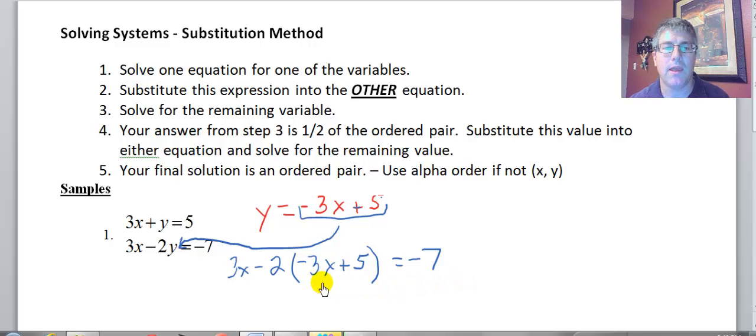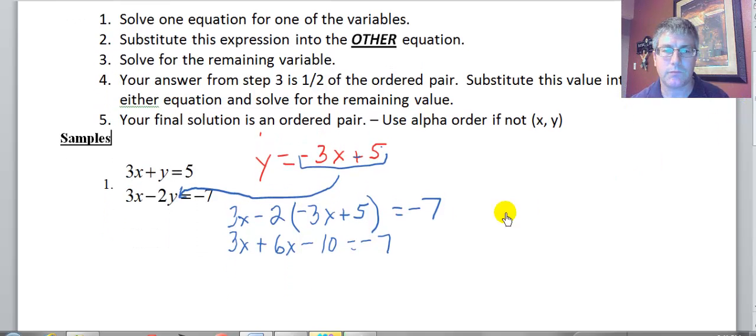So I've substituted it into the other equation. I've rewritten my new equation with one variable, X. Now we're going to solve this for X. So I get 3X plus negative 2 times negative 3X is 6X, negative 2 times positive 5 is negative 10, equals negative 7. I'll add 10 to both sides. I get 9X equals 3. I divide by 9, and I get X equals 3 ninths or 1 third.